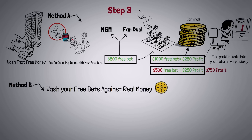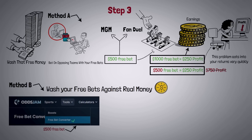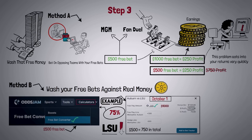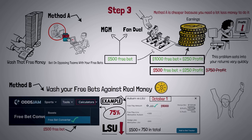Method B is to wash your free bets against real money. Take your $500 free bet and use OddsJam's free bet converter. Here's an example: Auburn versus LSU on October 1st — LSU is the favorite. OddsJam tells us it can wash 75% of our free bet. The calculator says we should put our $500 free bet on Auburn and put a $1,125 normal bet on LSU. No matter which team wins, we get a $375 profit. We've only used $500 of free bets instead of $1,000 and already got more money. We can use our other $500 free bet to do this again on another game and maybe make $750 in total. Method A is cheaper because you need a lot less money, but Method B is a lot more profitable. I initially used Method A, but now I've swapped to Method B and I'm not looking back.